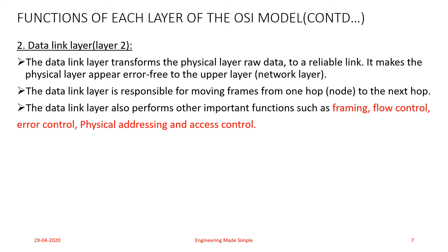A data frame consists of bits of data framed in an appropriate manner. There is one part called the header, attached at the beginning of the frame, and one part called the trailer, at the end of the frame. The header may consist of addresses — specifically the physical address at the Data Link layer. The trailer is used for the error correction mechanism.